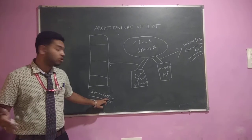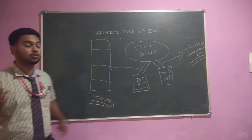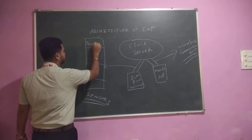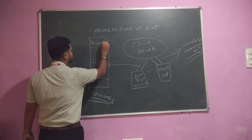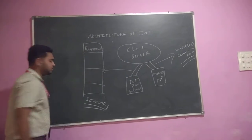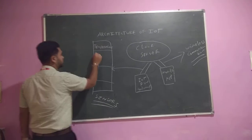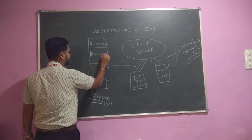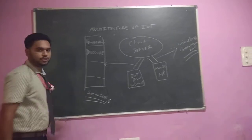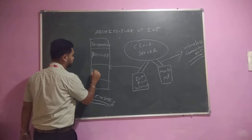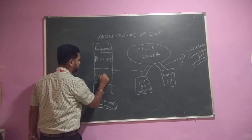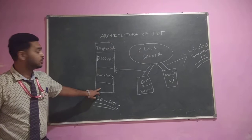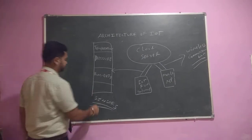I have told you the sensing parameters in the earlier class. The first one is temperature. The next one is pressure. The third one is humidity. And the last but not least is motion.